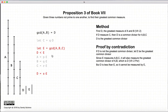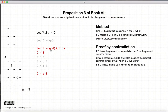But we have that D is less than E, and that E is measured by D, which is completely incompatible. So these three statements — that E is the greatest common divisor of A, B, and C; that E is greater than D; and that D is measured by E — are incompatible. So therefore this cannot be true, and we have that the greatest common divisor is D.